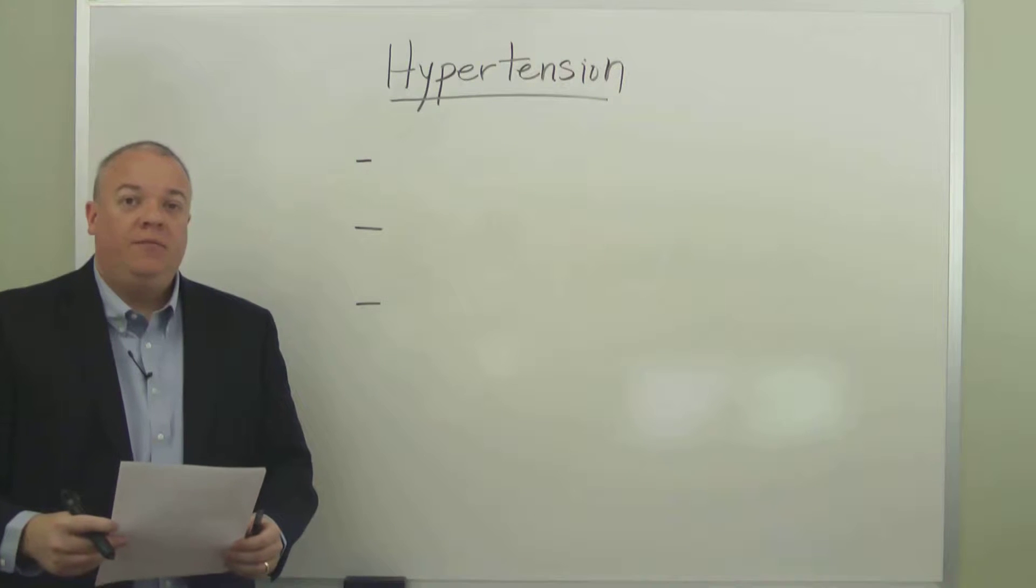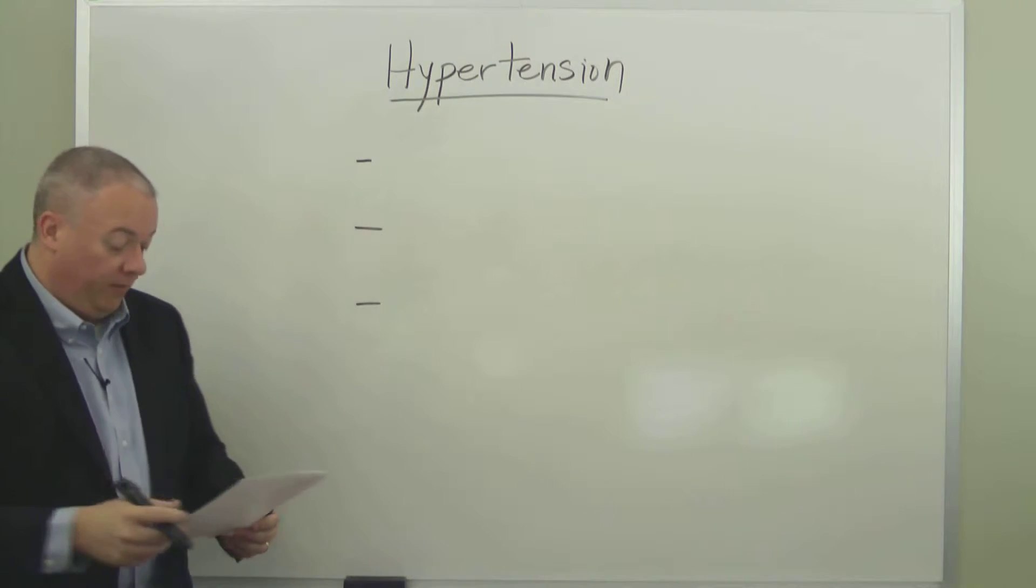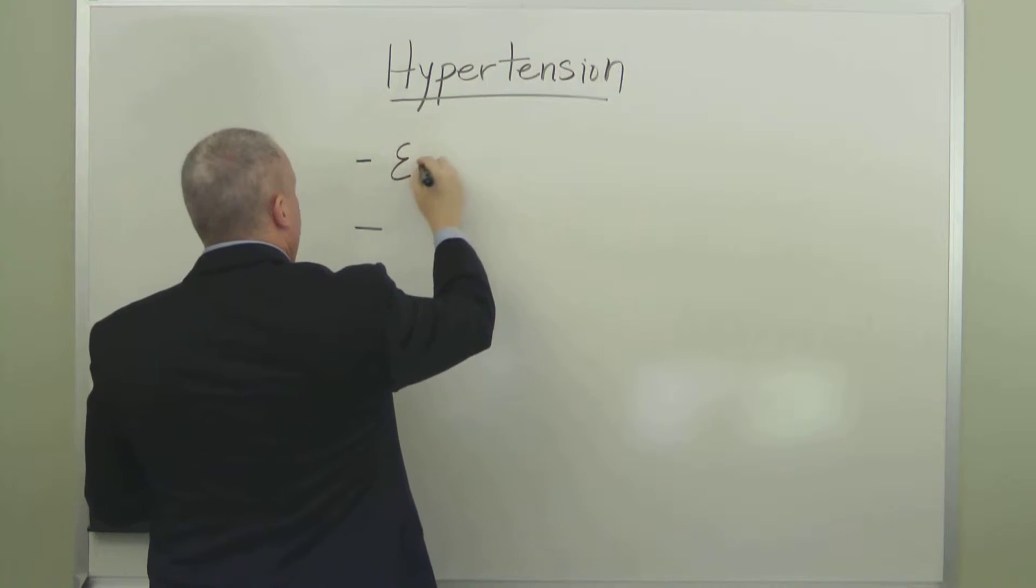Hypertension. Today we're going to go over three different forms of hypertension or high blood pressure. We'll begin with the first level, which is called essential hypertension.